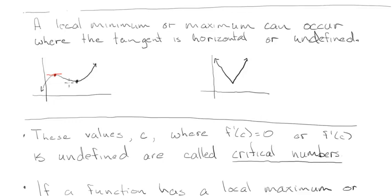So the slope of the tangent is 0. So they can occur when you have a horizontal tangent, which we know means the derivative is 0, or when the tangent is undefined. So remember that your absolute value function, we said at the corner, there is no tangent. So this would mean f'(c) does not exist.